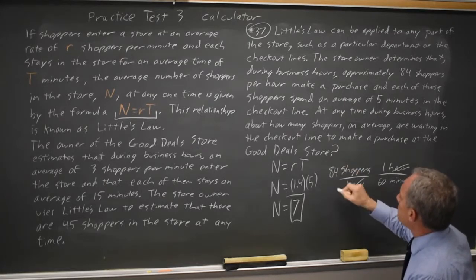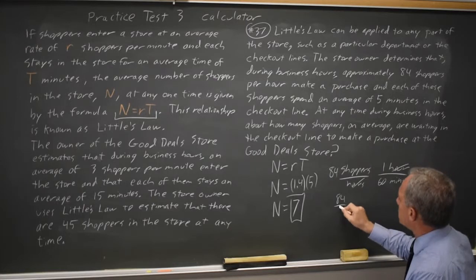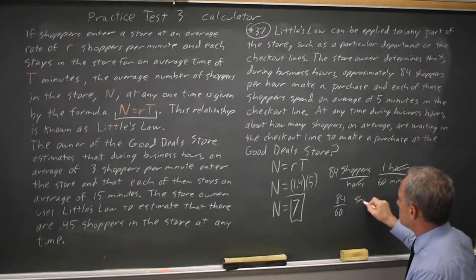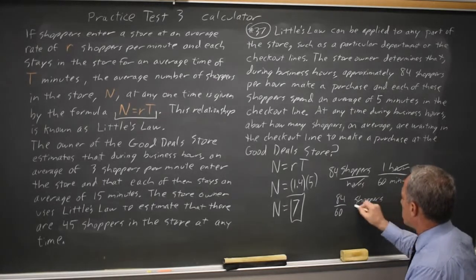So if it was 84 shoppers per hour, it's 84 over 60 shoppers per minute.